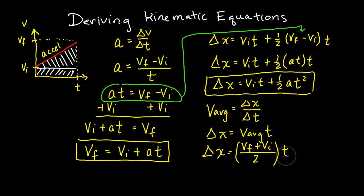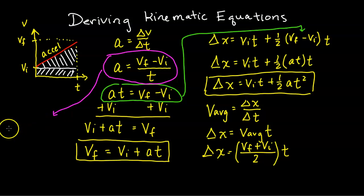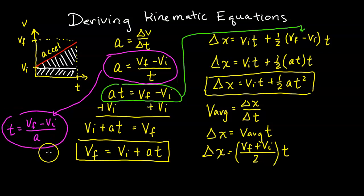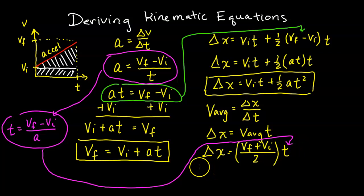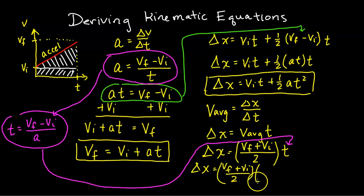We also notice that t can be written as (v_final minus v_initial) divided by a, by rearranging the first equation. We substitute this expression for t, giving delta x equals (v_final plus v_initial) divided by 2, times (v_final minus v_initial) divided by a.